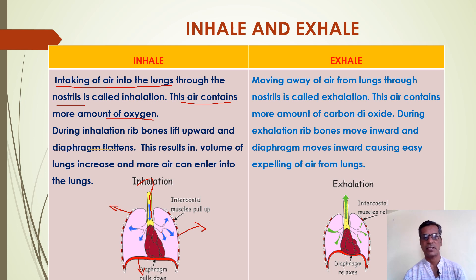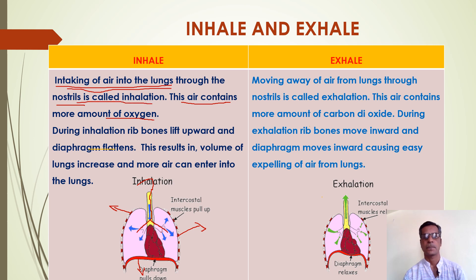As the rib bones move outward and the diaphragm also moves outward, the size of the lungs increases. As the size of the lungs increases, air can easily enter into the lungs — that means from the trachea, the air can enter into both the lungs. This process is called inhalation. Totally, the intaking of air into the lungs through the nostrils is called inhalation.